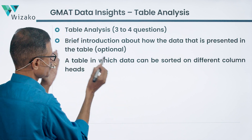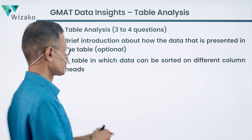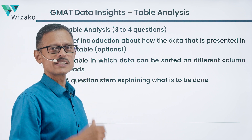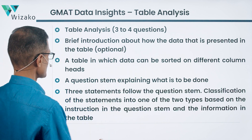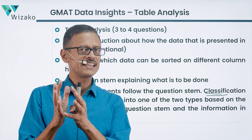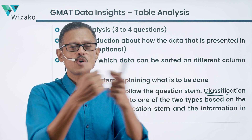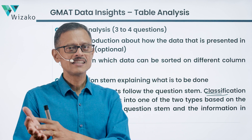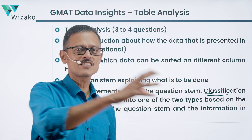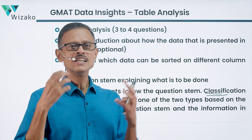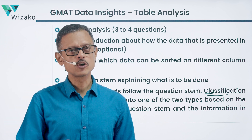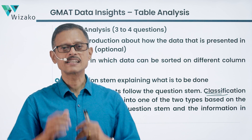Now we know what the data is about and how it's presented. The question prompt tells you what you need to do. Finally, you have answer options. The questions in table analysis are classification questions — they present three statements and ask you to classify each into two categories, such as true or false, greater or smaller, or can be inferred versus cannot be inferred. You must classify each of the three statements accordingly.